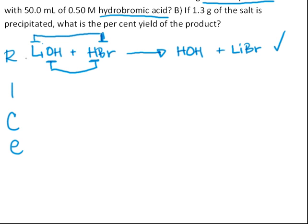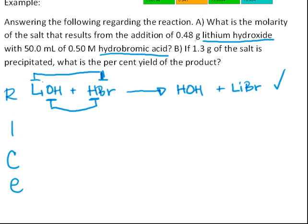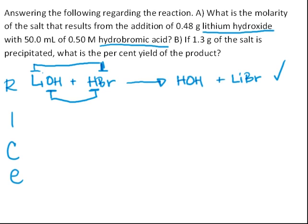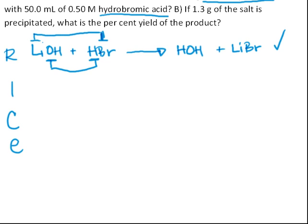R stands for reaction, and I stands for initial amounts. So we need to convert the original amounts given to us in the problem into moles, because this is what we need to put in our I portion of our RICE equation.